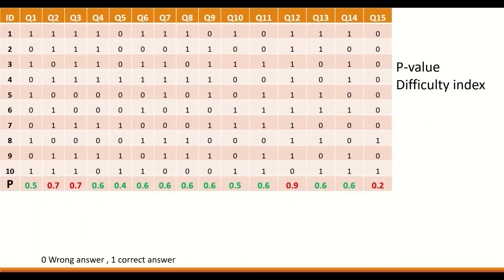This table shows 15 multiple choice questions answered by 10 students. The answers were recorded as 1 for a correct answer and 0 for a wrong answer. To calculate the item difficulty or p-value for each question, add all the correct answers for each question and divide by the total number of students. For question 1, that is 5 correct answers divided by 10, giving 0.5. For question 15, it is 2 correct answers divided by 10, giving 0.2.